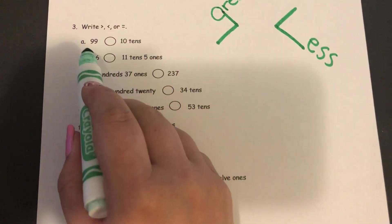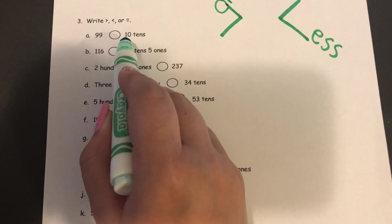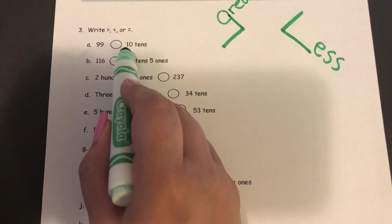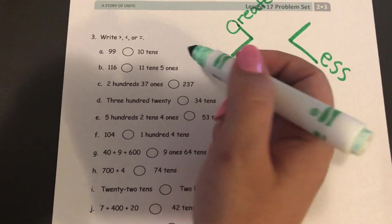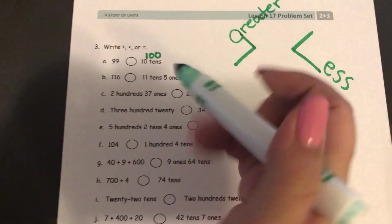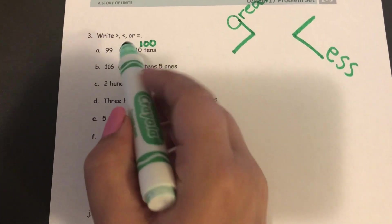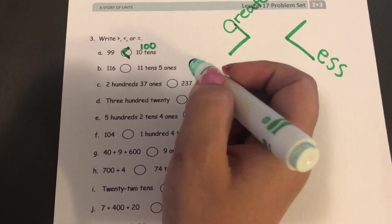All right, so I'm comparing 99 and I'm comparing it to ten tens. Well, because this isn't written in standard form, the first thing I'm going to do is write it in standard form. So I know that ten tens is 100. Now they're easy to compare. I know that ninety-nine would be less than 100.